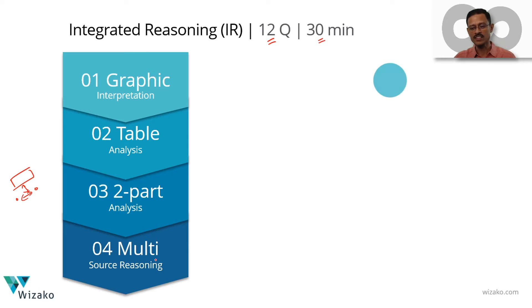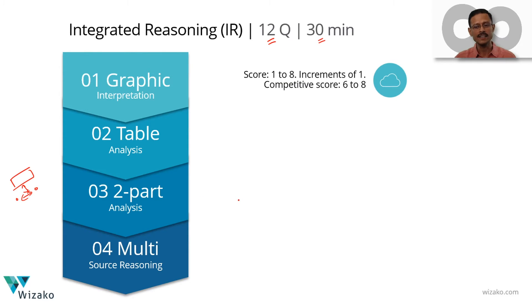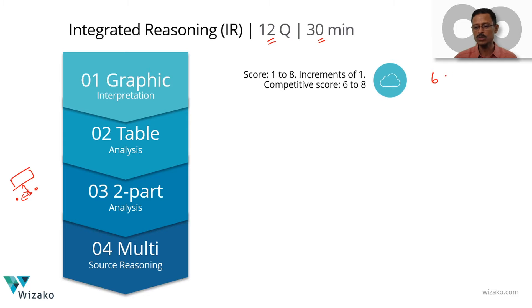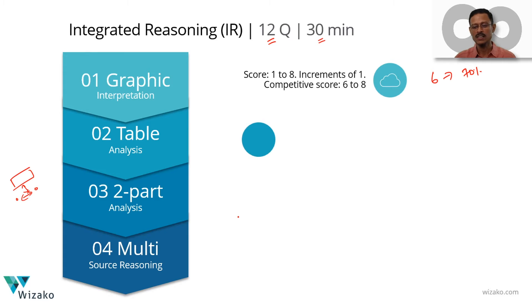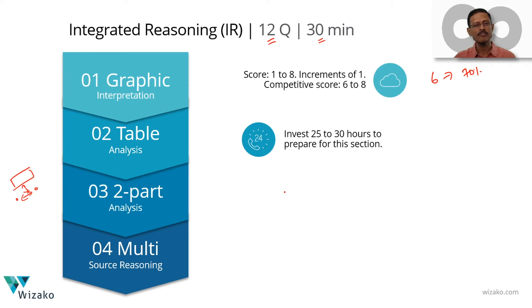The IR section is scored on a scale of 1 to 8, moving in increments of 1. A competitive score is 6 to 8. A score of 6 in 2018 translates to the 70th percentile, so 6, 7, and 8 are all competitive scores. Roughly 25 to 30 hours of preparation will see you there.